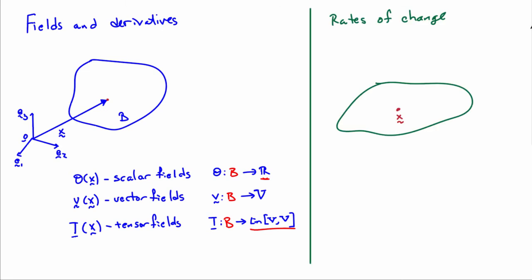So let's consider how we can calculate rates of change. Let's consider our body B again, and look at a point x, and that's the location of the point relative to some coordinate system. And what I'd like to do is figure out how a field changes, let's say a scalar field, as we move from one point x to another. And so to be able to find that, first we need to define a direction.